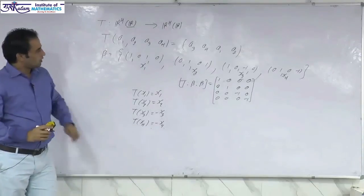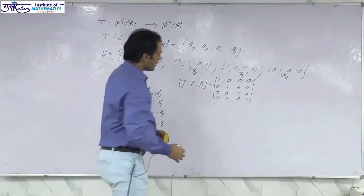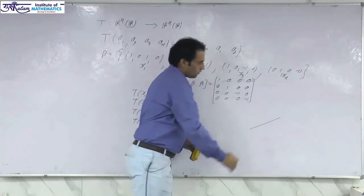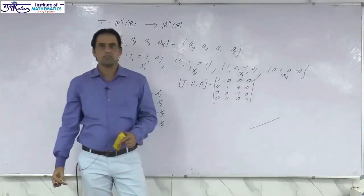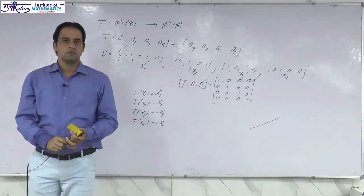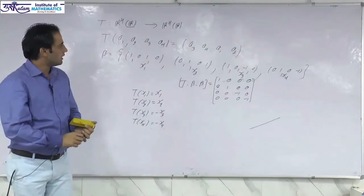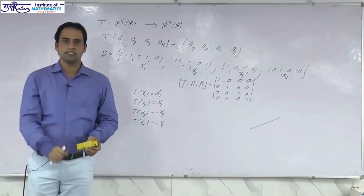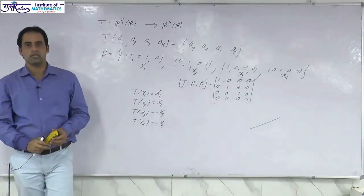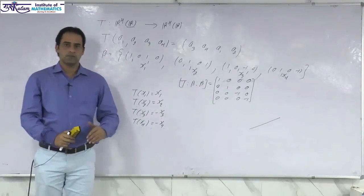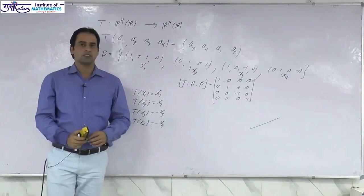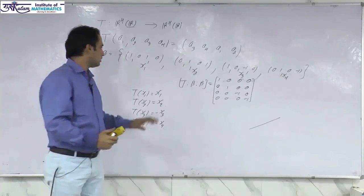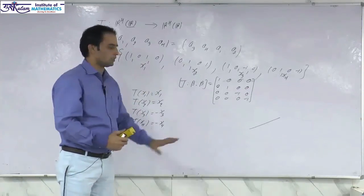Hence this operator is diagonalizable over the real field. This is the example of a diagonalizable operator. Next, we will discuss the properties by which we can check whether an operator is diagonalizable or not, and further we will discuss some of the questions asked on diagonalizable operators.